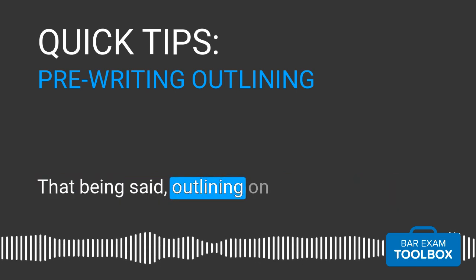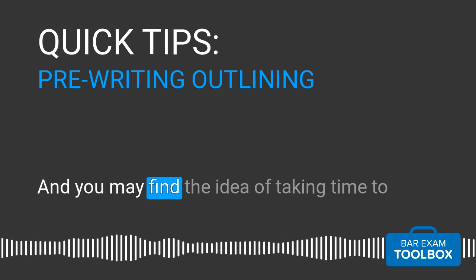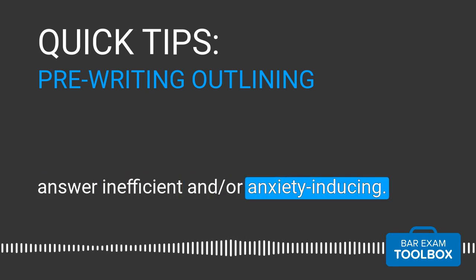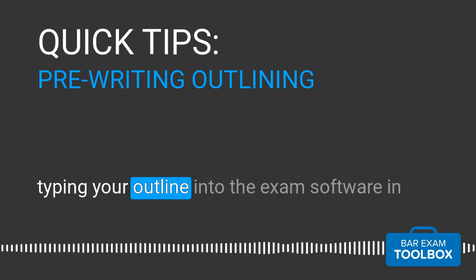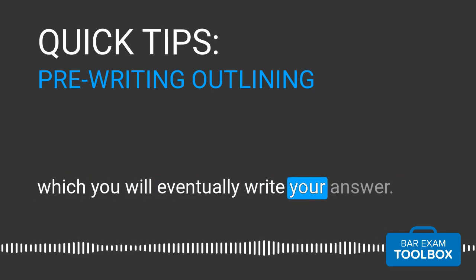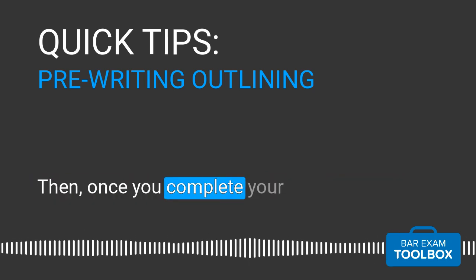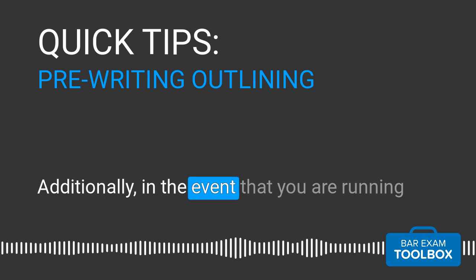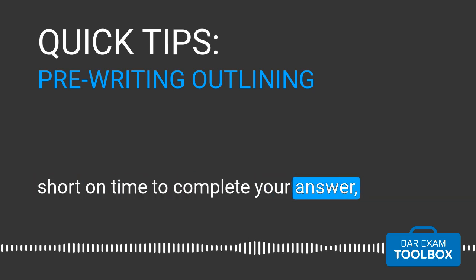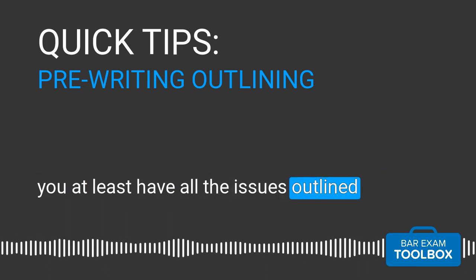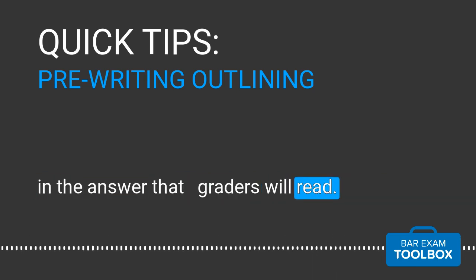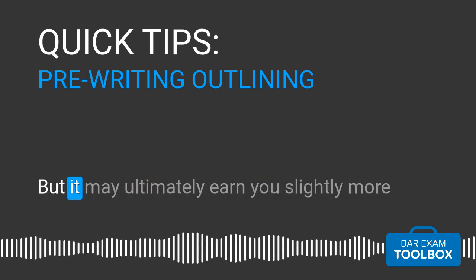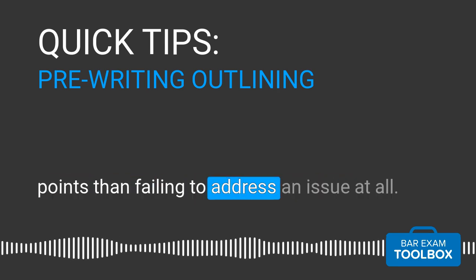That being said, outlining on scratch paper is not for everyone, and you may find the idea of writing words that will not become part of your answer inefficient or anxiety-inducing. If that is the case, you may want to try typing your outline into the exam software in which you will eventually write your answer. Then, once you complete your outline, you can simply go back to each section and fill in your answer. Additionally, in the event that you are running short on time, you at least have all the issues outlined in the answer that graders will read. Leaving answers in outline form is far from ideal, but it may ultimately earn you slightly more points than failing to address an issue at all.